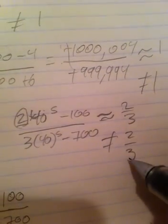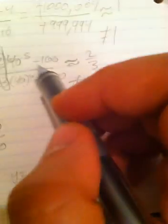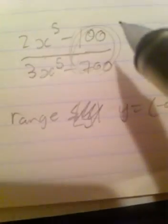That's because the reason why these determine the number that it gets really close to is because when x is really big, these numbers won't matter that much, but they will matter enough to where your range will never reach this number 2 over 3. I hope this helps out.